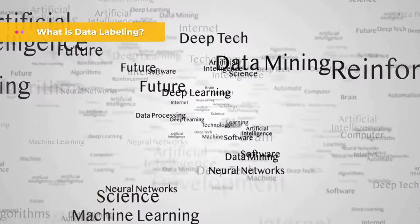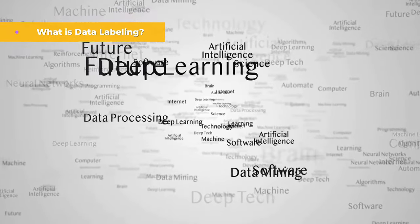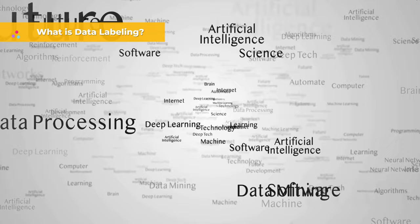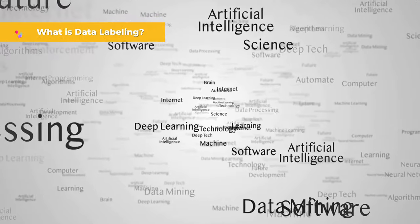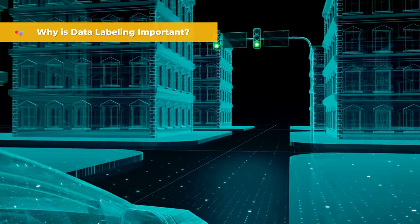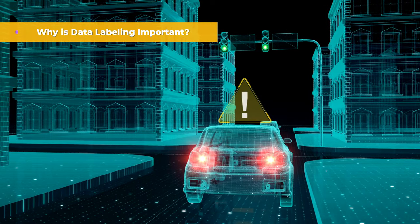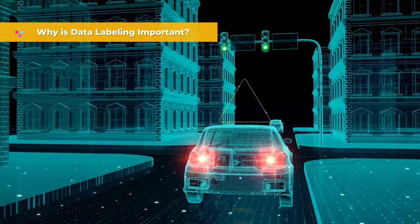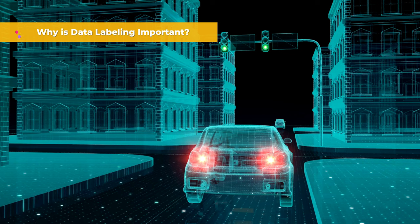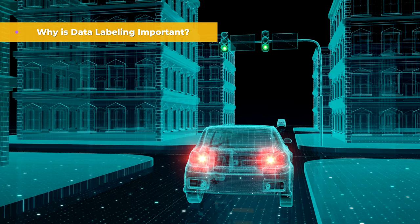Data labeling is the secret sauce that powers a wide range of cutting-edge technologies, such as machine learning, computer vision, natural language processing, and more. Data labeling is essential for the success of machine learning models. Without proper data labeling, machines would struggle to understand the context of the data they're analyzing, leading to inaccurate predictions or classifications.